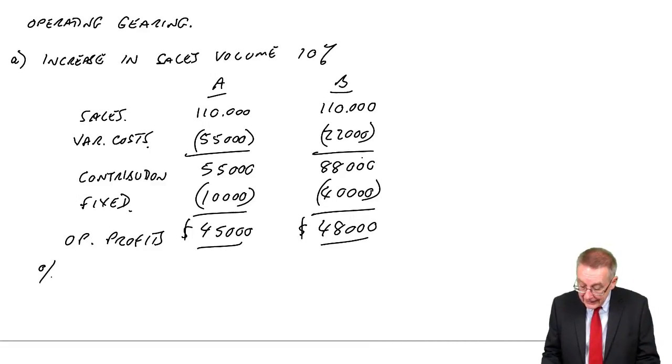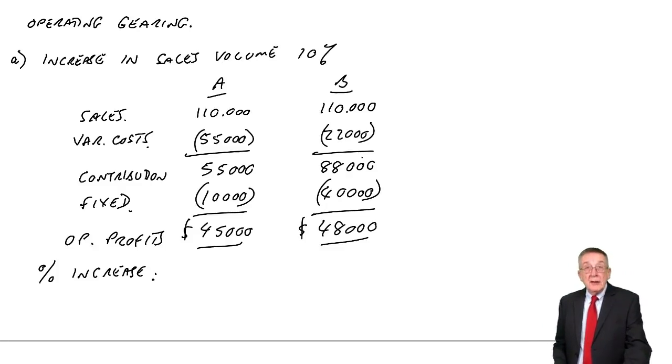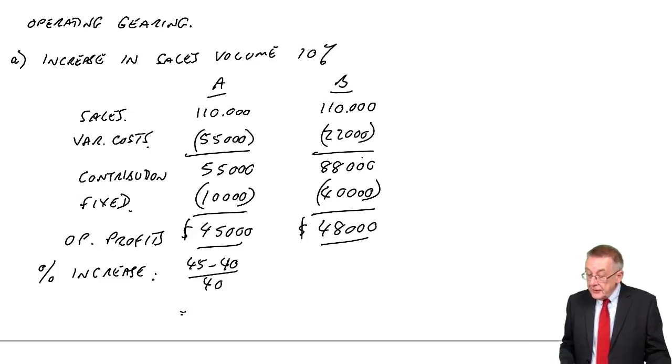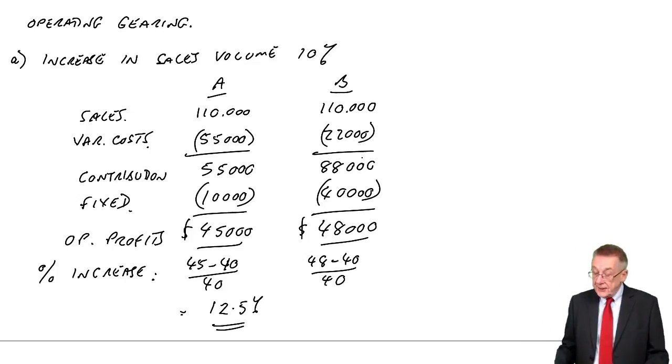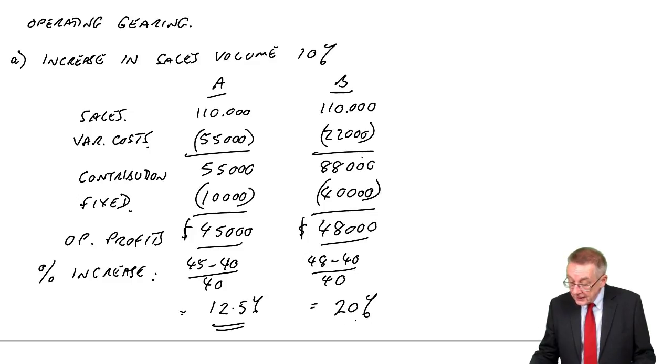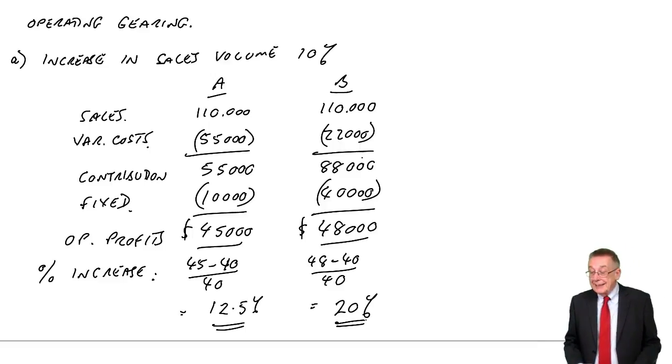But what's the percentage change in the profits? In the case of A, remember they were 40 and they've gone up to 45 on an existing 40,000. So they've gone up by 5,000 on 40, which is 12.5%. Whereas in the case of B, they were 40, they've gone up to 48. So they've gone up by 8,000 on an existing 40. They've gone up by 20%.